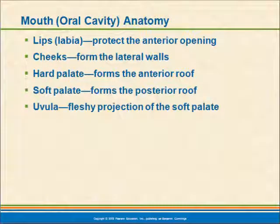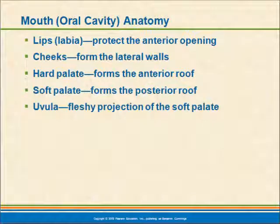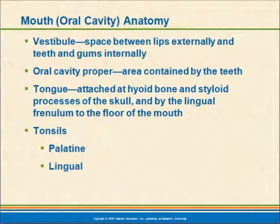The mouth, sometimes referred to as the oral cavity, is surrounded by the lips and cheeks that form the walls of this chamber. We have a hard palate made of bone with skin overlaying it at the front part of the mouth, and a soft palate in the back which acts as a flap and seals off the nasal cavity when we swallow. The uvula is the little dangly thing in the back, also involved in sealing that off. The area on the outer part of the mouth between the cheeks and the teeth is referred to as the vestibule.